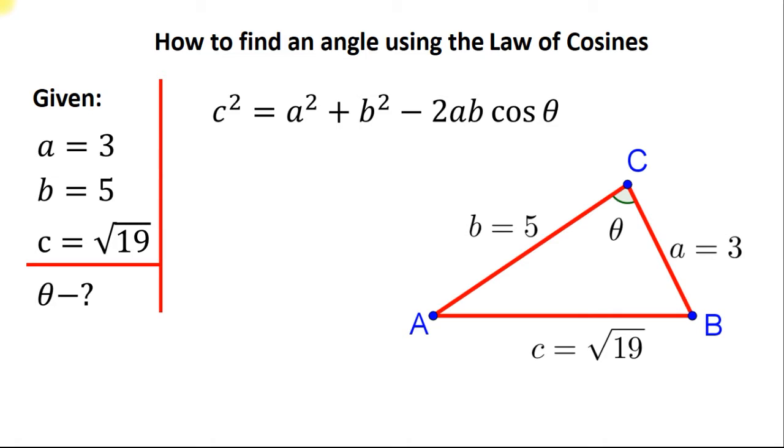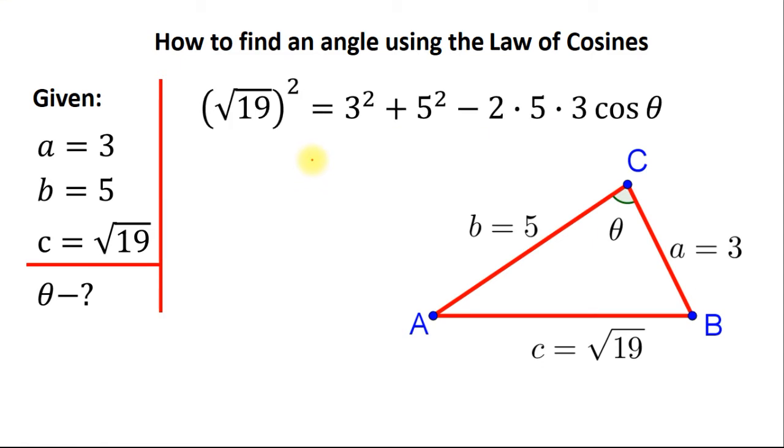The side opposite to the required angle is the side c. So we have to use the formula for the c squared in this case. It looks like this. Now we just need to plug all the given numbers in this formula. So we get square root of 19 squared which is actually 19 is equal to 3 squared which is 9 plus 5 squared which is 25 minus 2 times 5 times 3 times cos theta. This term is equal to 30. So we get the following equation.